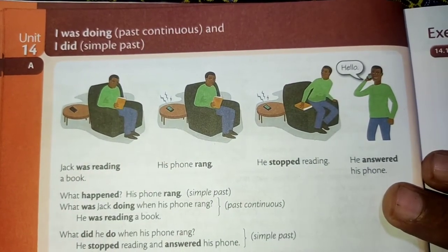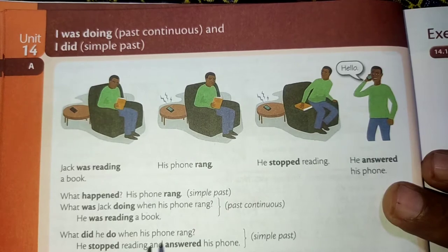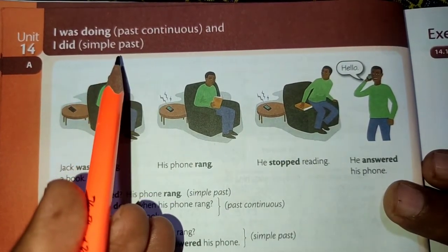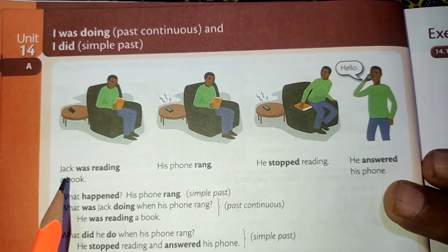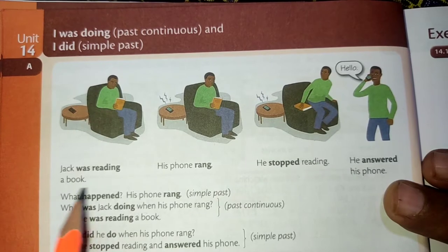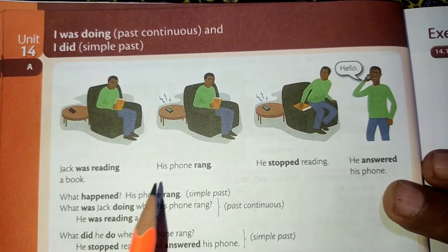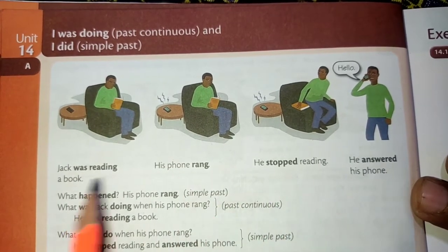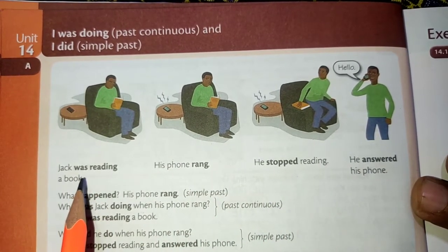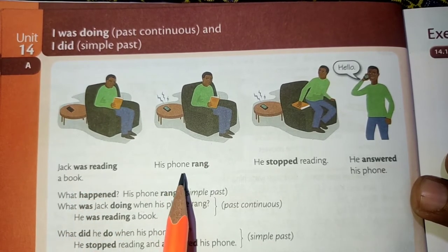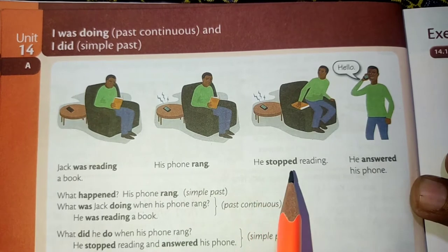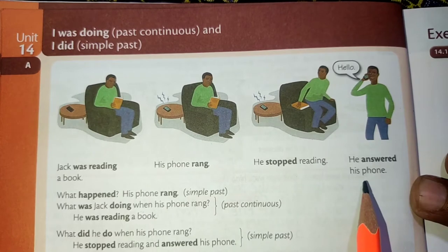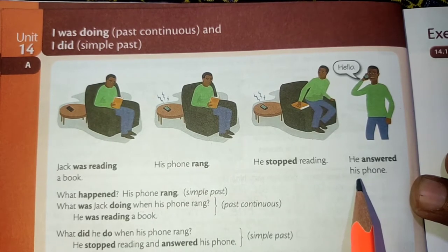Hello, welcome to your learning channel. Today in Unit 14 we are going to learn past continuous and simple past. Here we have example sentences: Jack was reading a book, his phone rang, he stopped reading, he answered his phone. 'Jack was reading a book' is in past continuous; 'his phone rang,' 'he stopped reading,' and 'he answered his phone' are in simple past.